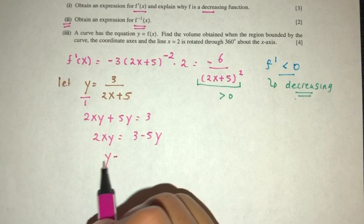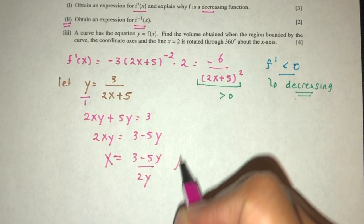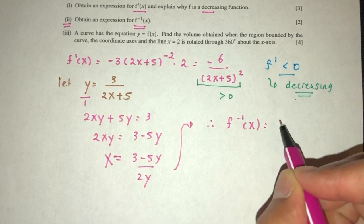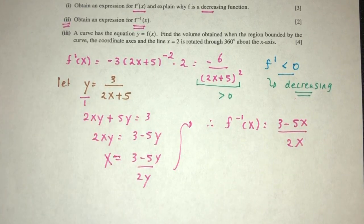So here you will have x have to be (3 minus 5y) divided by 2y. So finally, from this, we realize f inverse, it is in terms of x. We have to write (3 minus 5x) over 2x. That is part two.